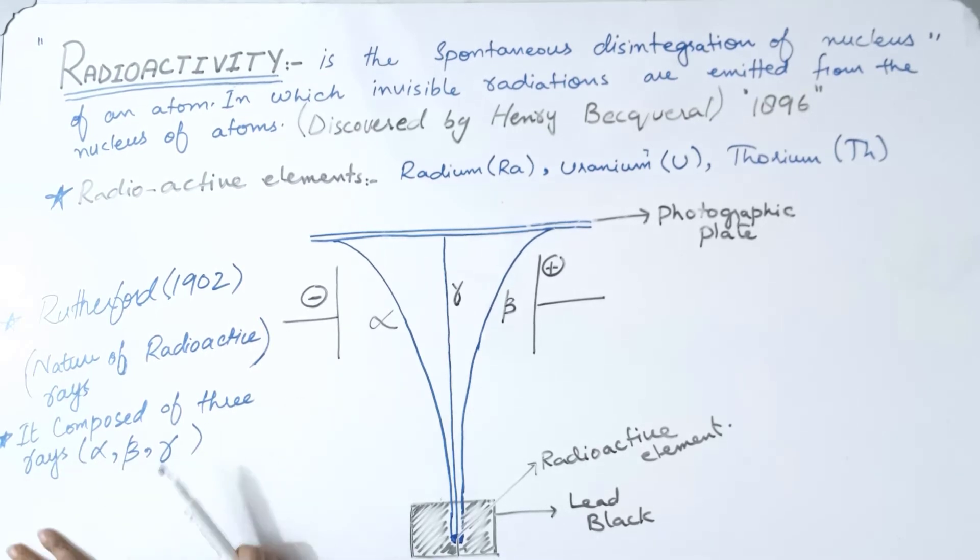Rutherford, in 1902, explained the nature of radioactive rays. He showed that radioactive rays are composed of alpha, beta, and gamma rays through an experiment. Let's discuss that experiment.